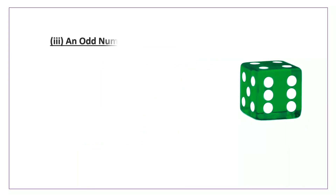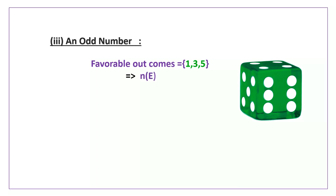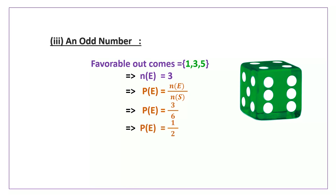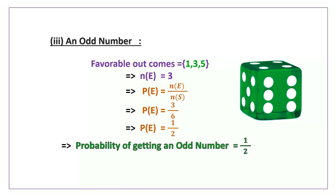Now for an odd number: to get an odd number on the top face, the favorable outcomes are 1, 3, 5. Therefore n of e is equal to 3. p of e is equal to n of e by n of s, which implies p of e is equal to 3 by 6, which again equals 1 by 2. So the probability of getting an odd number on the top face is equal to 1 by 2.